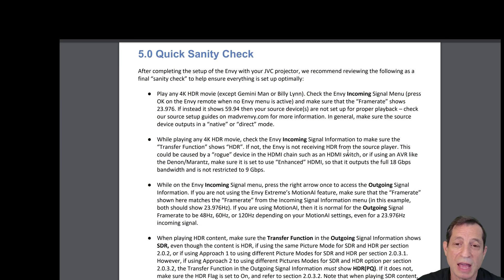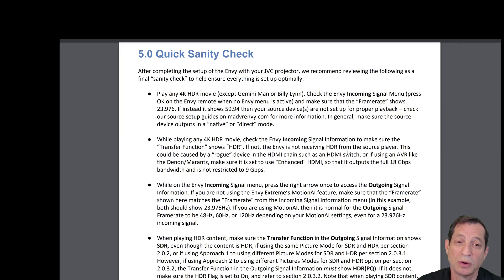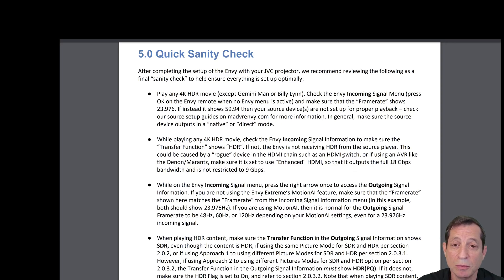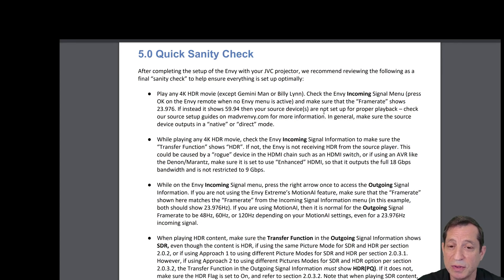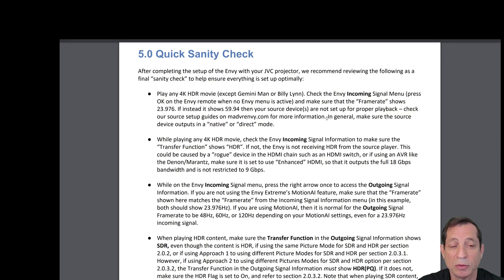Now let's talk about a quick sanity check. After completing the setup of the Envy with your JVC, we recommend reviewing the following as a final sanity check to help ensure everything is set up optimally. First, play any 4K HDR movie — except Gemini Man or Billy Lynn — and check the Envy incoming signal menu. Make sure that the frame rate shows 23.976. If instead it shows 59.94, then your source device is not set up for proper movie playback. Check our source setup guides on madvrenvy.com for more information. In general, you want to make sure the source device outputs in a native or direct mode.